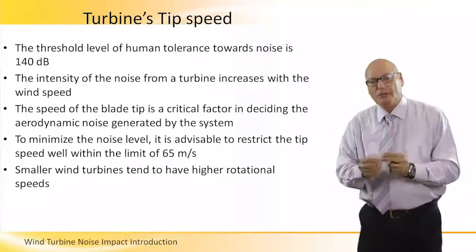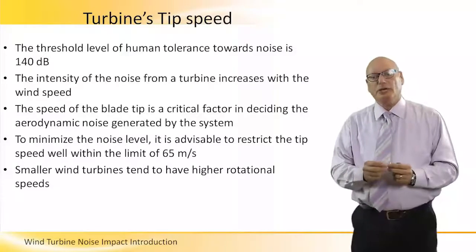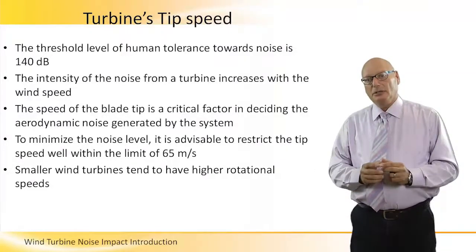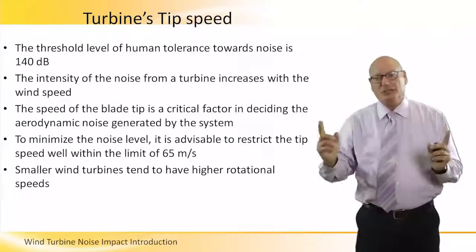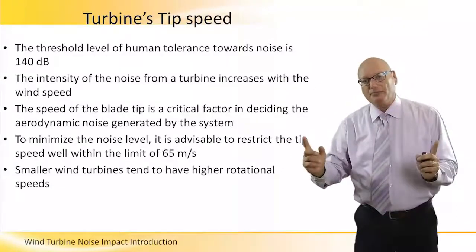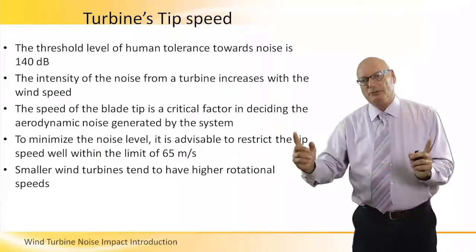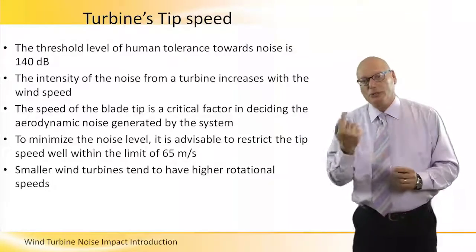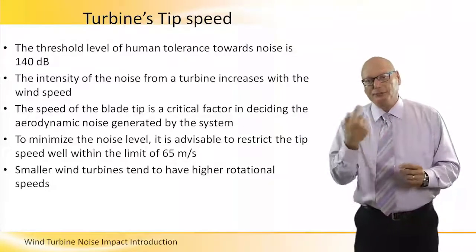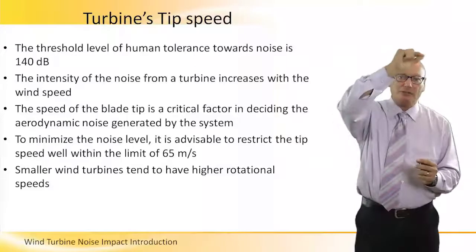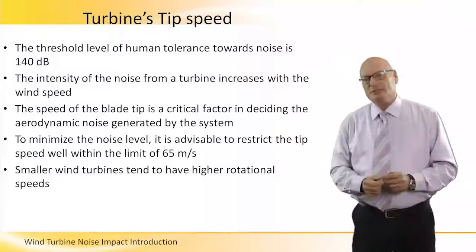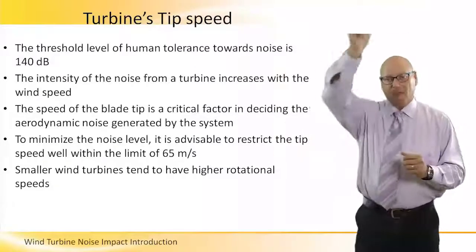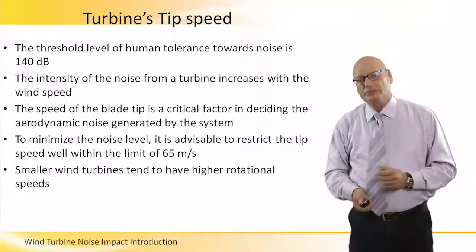Smaller wind turbines tend to have higher rotational speed, but because they are small and the diameter is a small number, the tip speed is also a small number. So although they rotate fast, the tip speed is not as high as that of large turbines.